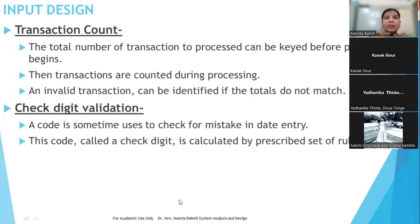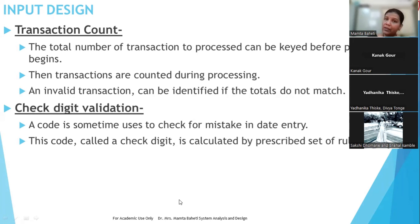Then there is check digit validation. For example, a particular code like Nagpur's STD code 0712 — it should be typed in exactly this sequence: 0, 7, 1, 2. Only if typed in this sequence will it be accepted as the Nagpur code; otherwise it will generate an error. This is possible when we validate each digit — whether after 0 comes 7, after 7 comes 1, after 1 comes 2. This type of validation is called check digit validation.